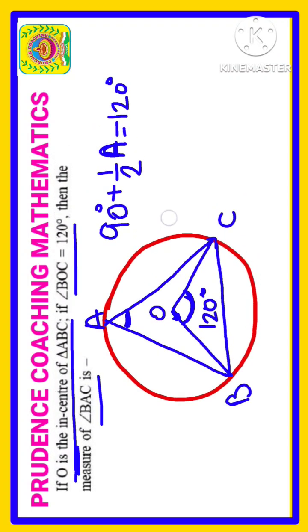Let us solve this equation. Let us take this 90 to the other side. So half of A will be equal to 120 degrees minus 90 degrees. Half of A equals 30 degrees.